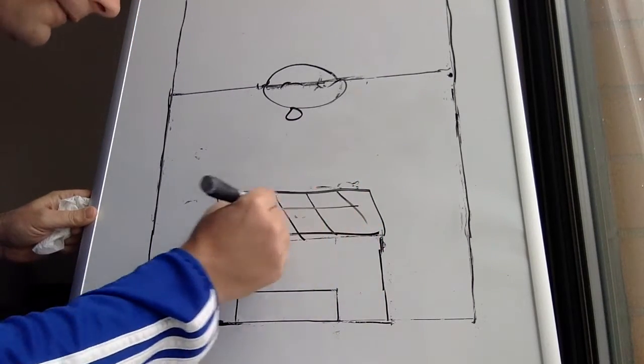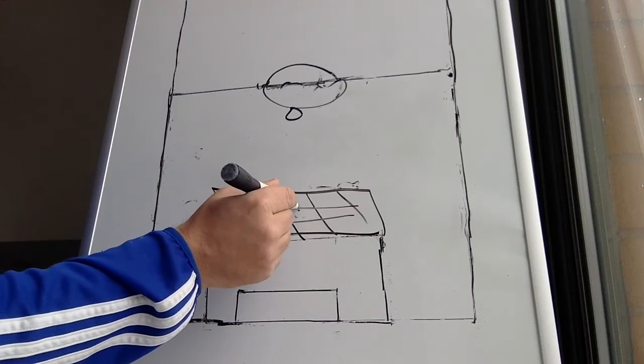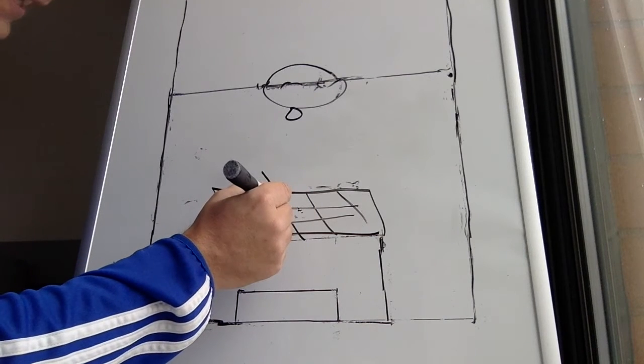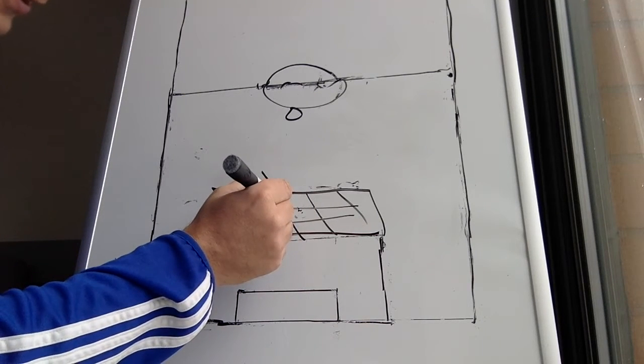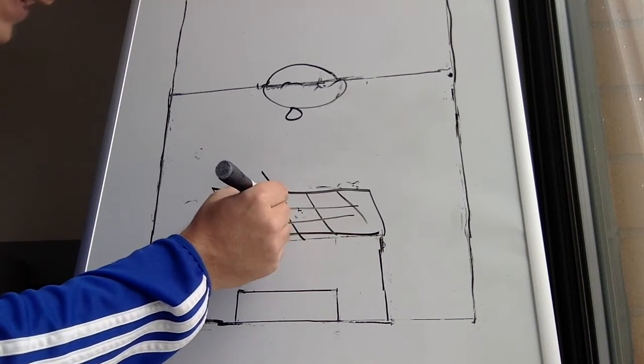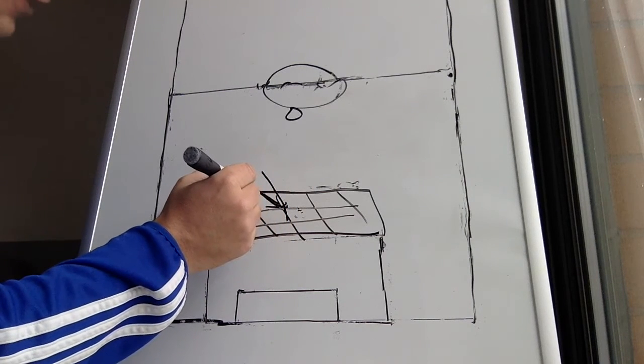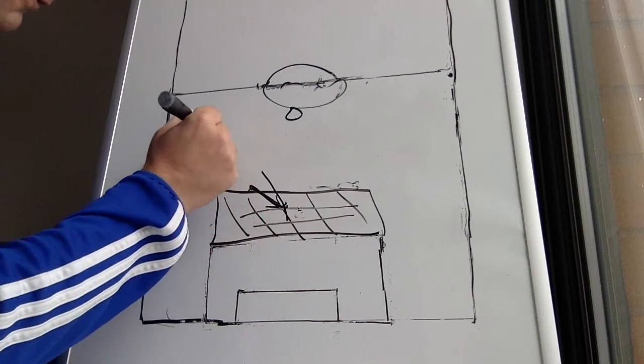You have to defend this. When Jose Mourinho was at Chelsea, this is what he did so well. Any ball that was played in this box, they weren't allowed to turn. They weren't allowed to play forward. They got squeezed out, made to go sideways, square or back, and usually created a turnover from the turnover.